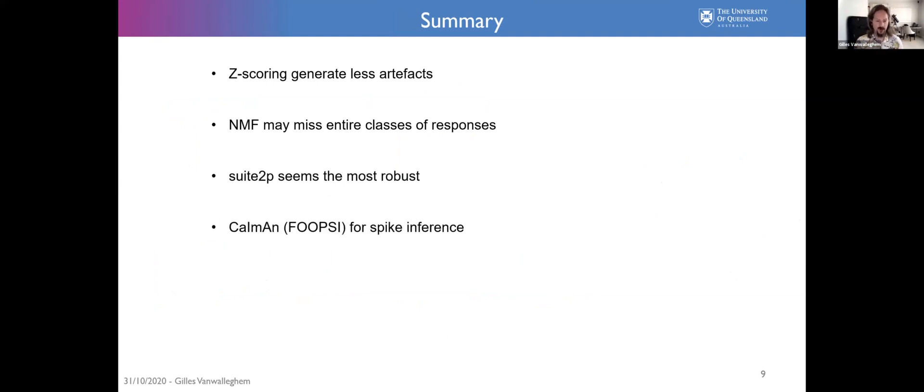So in summary, what's my recommendations are: Z-scoring apparently generates way less artifacts than the delta F over F with a moving baseline. If you use a non-negative assumption in the way you analyze your data, such as NMF or binarizing your data, you may miss an entire class of responses, which is what would have happened to us if we had done so. Suite2P seems to be the most robust amongst all of these, and FOOPSI for the spike inference give the best results.